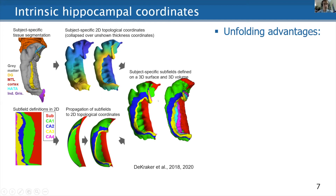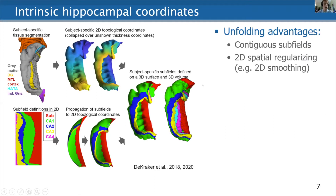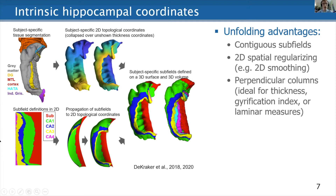We did this for our manually defined subfields, and you can dynamically go back and forth between these two spaces. Some advantages of doing that: you always see continuity between the different subfields, and you can apply things like 2D spatial regularization — for example, if you had data instead of subfield definitions, you could smooth them in 2D. You can also compute a perpendicular direction in a fairly straightforward way, which is really useful for doing things like thickness, calculating a gyrification index, or other laminar measures.